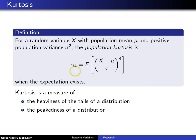γ₄, which is again not a universal notation but we will use it here, is the expected value of that standardized random variable raised to the fourth power when the expectation exists.